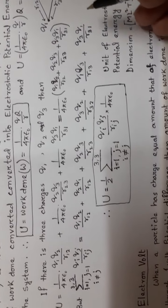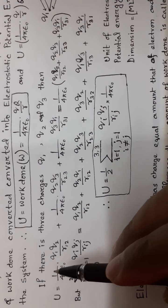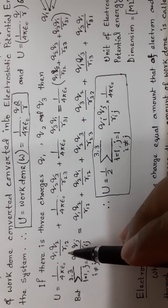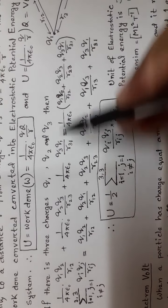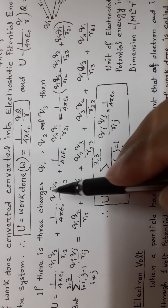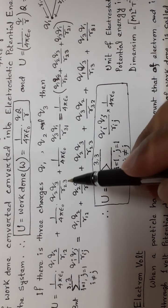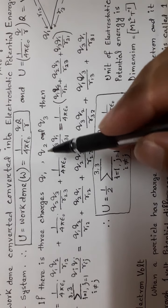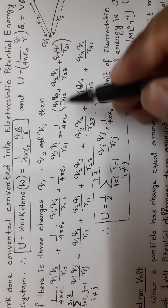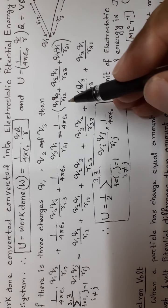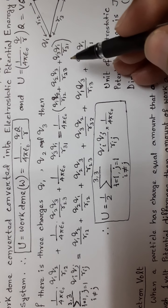The total potential energy of the system is the sum of pairwise potential energies: for Q1 and Q3, for Q2 and Q3 with distance R23, and Q1 divided by R31.